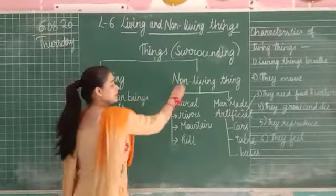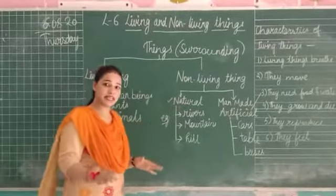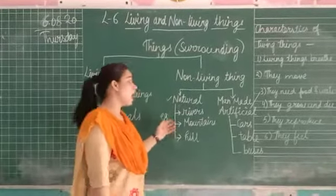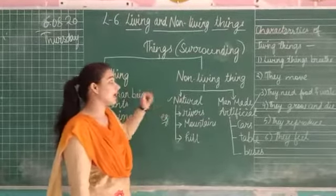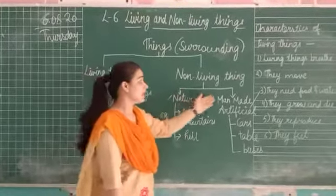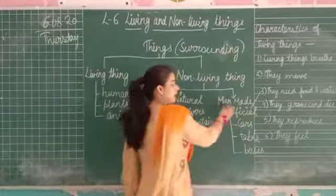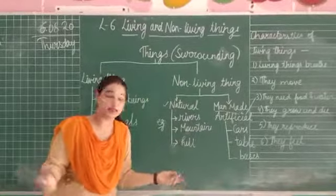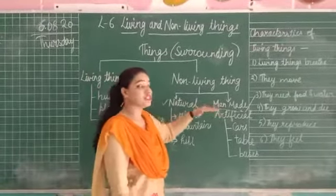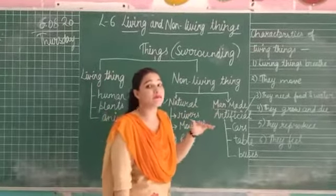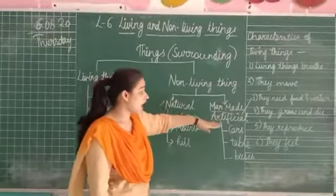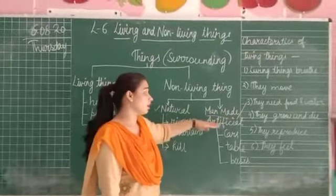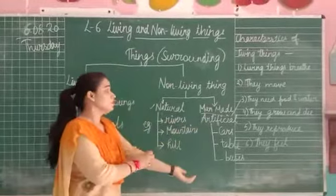Non-living things which are present in nature — like rivers, mountains, and hills — are natural non-living things. Man-made, as the name suggests, means made by man. Things which are made by man are also known as artificial non-living things.